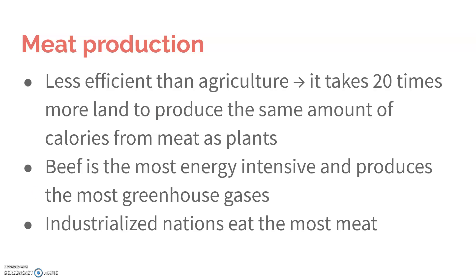Meat is unfortunately the least efficient type of agriculture. It takes about 20 times more land to produce the same amount of calories from meat as from plants, because animals need either pasture or they need to have food grown for them.